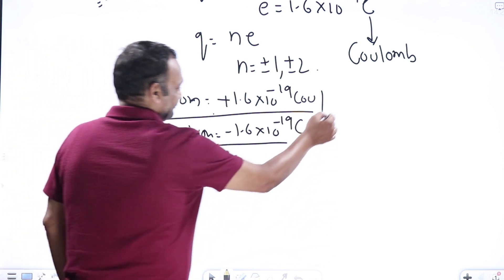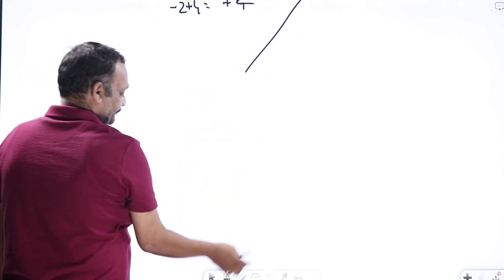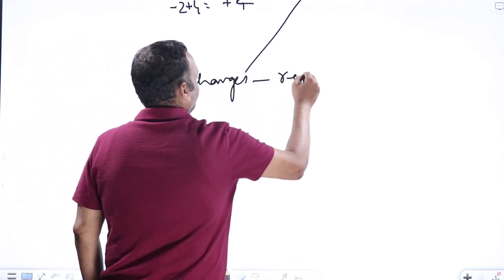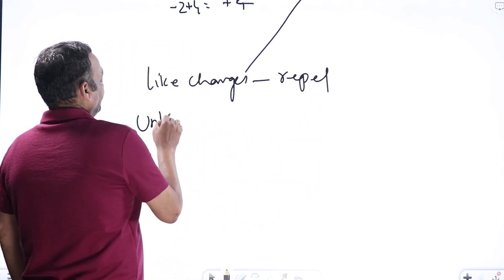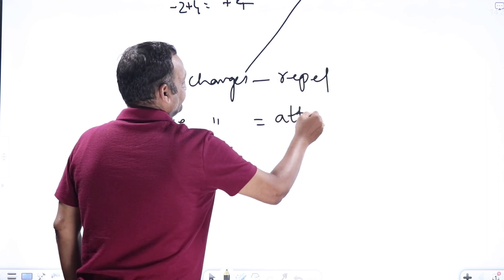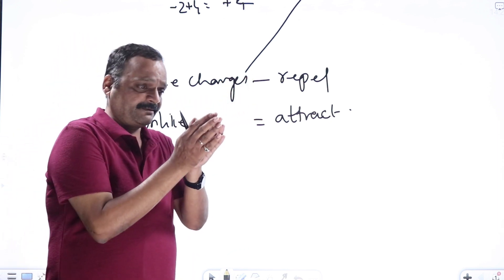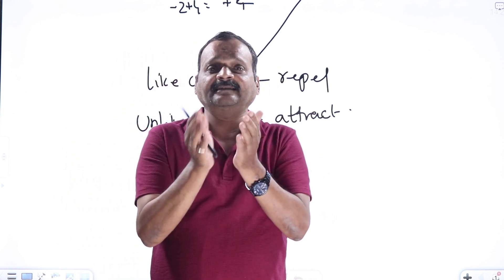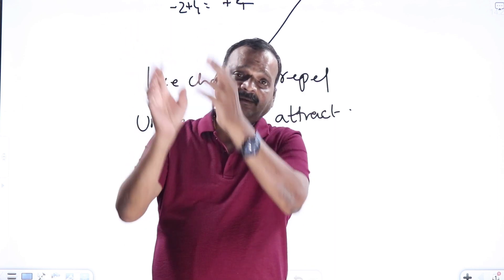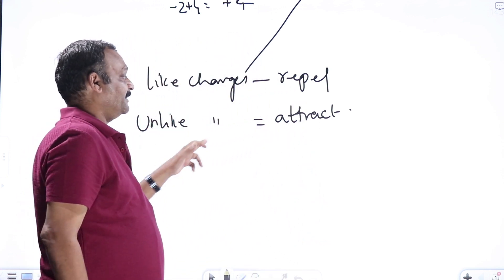What has been observed is that like charges repel each other — two positive charges repel each other, two negative charges repel each other. Unlike charges — that is positive and negative — attract each other. So in electrostatics we have both attraction and repulsion. Two glass rods rubbed with silk cloths repel each other; two silk cloths also repel each other; but a glass rod and a silk cloth attract each other.